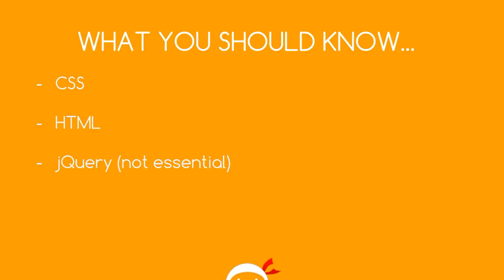There are a couple of things you should probably know before you start this playlist. The first one is CSS — that is a dead cert. You need to know what you're doing in CSS because after all, we're controlling these animations using CSS. The second one is HTML — we're going to be controlling HTML elements, the things that are going to be animating on the page. And thirdly, jQuery is not absolutely essential, but we might start using it just to add a little bit of interactivity, such as click events. So if you don't know any of this, I've got playlists on all three things on this channel — I'll leave the links down below so you can check those out first and then come back.